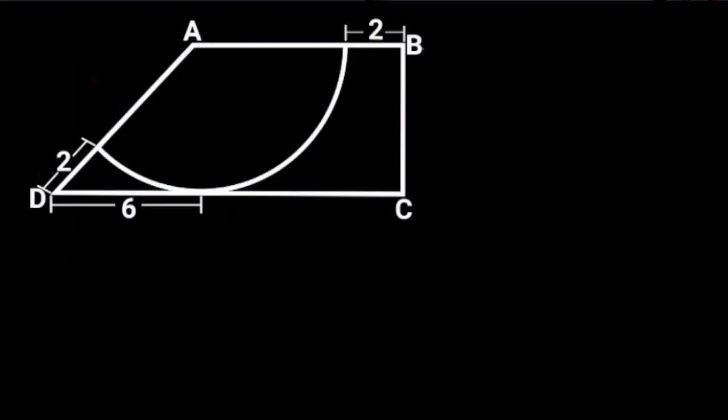To solve this problem, first let's draw a perpendicular line from A to line DC. Let's call this point M. Observe that AM is the radius of the sector. Let's call the radius of the sector X.